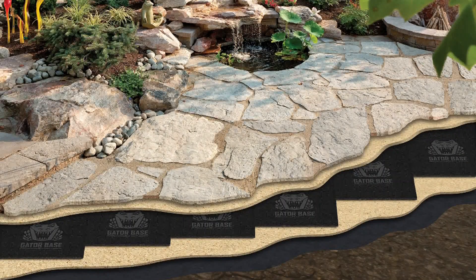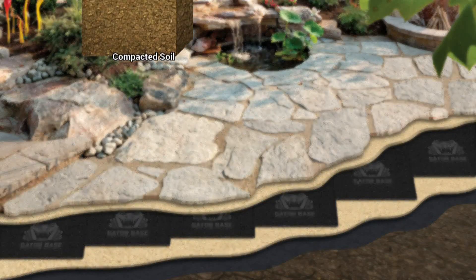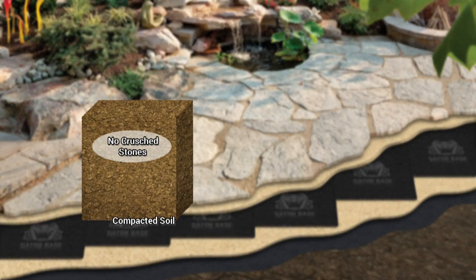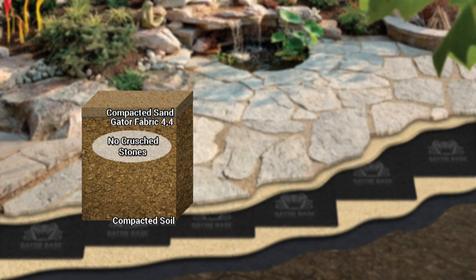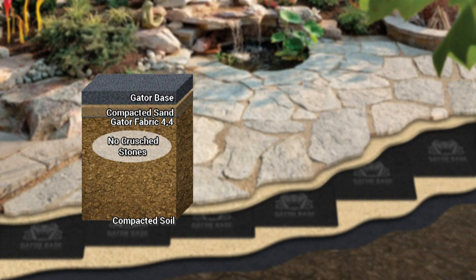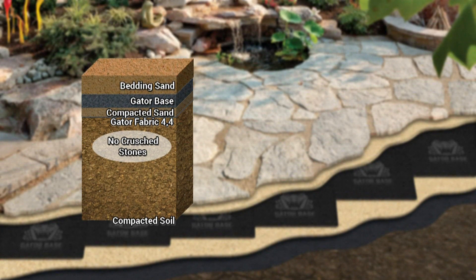Polybind Stone Dust could also be used with a Gator base foundation. Cover the foundation inside with Gator fabric GF 4.4. Lay in and compact three-quarters of an inch of sand down to half an inch. Then lay the Gator base and lay a level 1 inch of loose bedding sand.